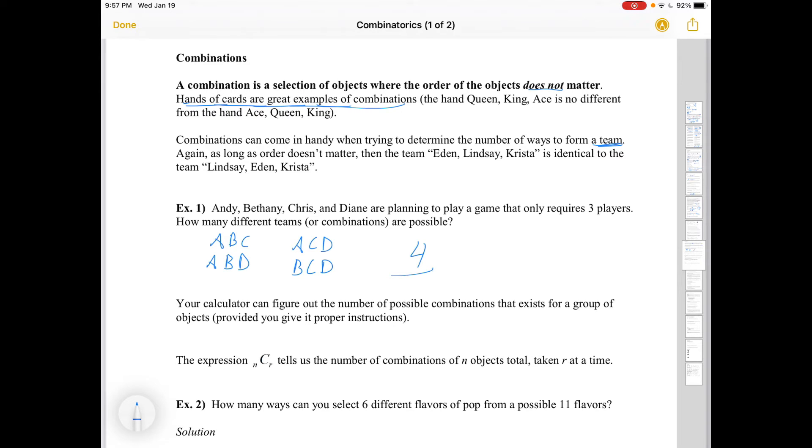Your calculator can figure out the number of possible combinations using this NCR button, which is probably very close to your NPR. The actual formula for NCR comes from permutations with identical objects, which we've kind of glossed over, but it would be this.